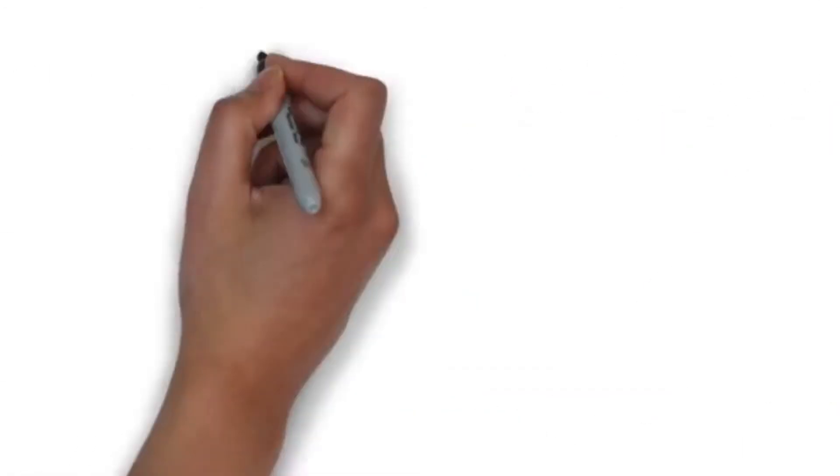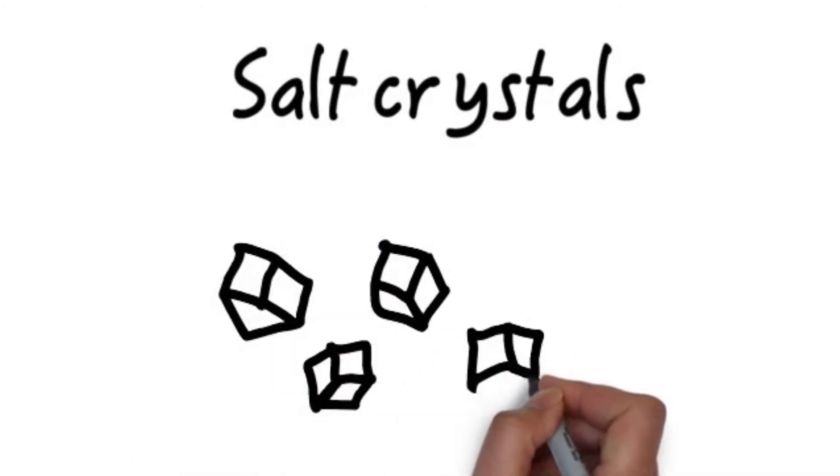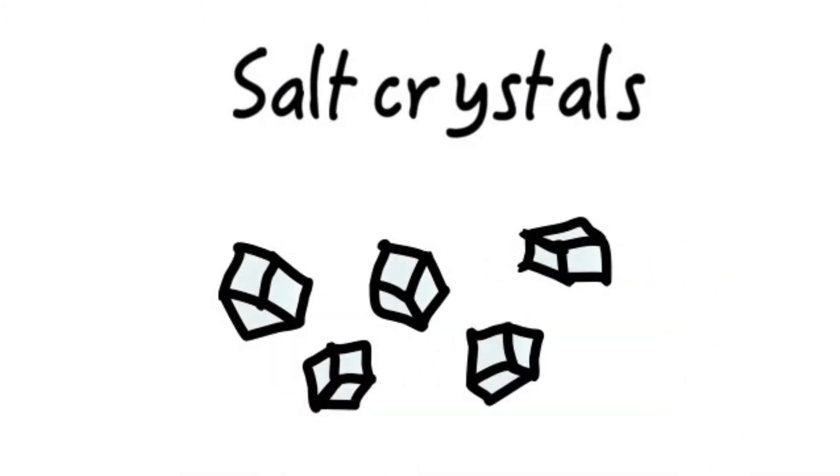Salt crystals are rocks that contain crystals. Melting and cooling processes create a three-dimensional pattern that gives the rock a regular shape and flat sides.